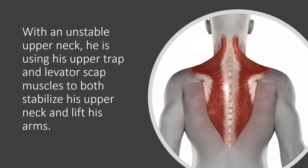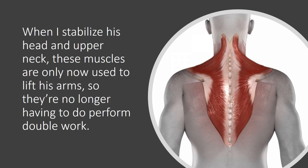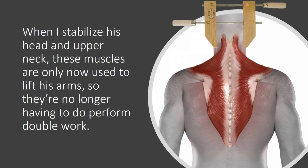So what just happened — how could that be? Well, with an unstable upper neck, he's using his upper trap and levator scap muscles to both stabilize his upper neck and lift his arms. But when I stabilize his head and upper neck, these muscles now only have to lift his arms. They're no longer doing double duty.